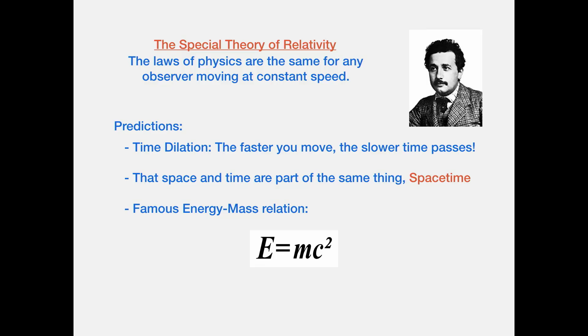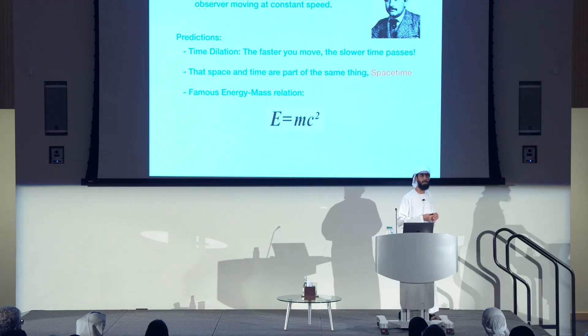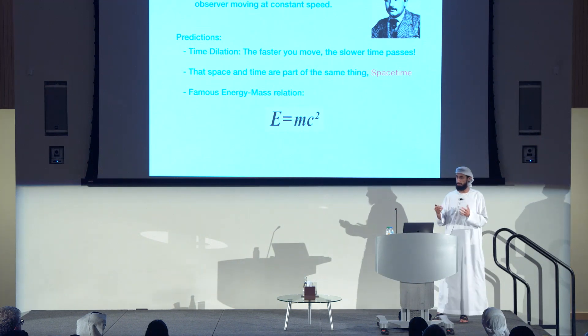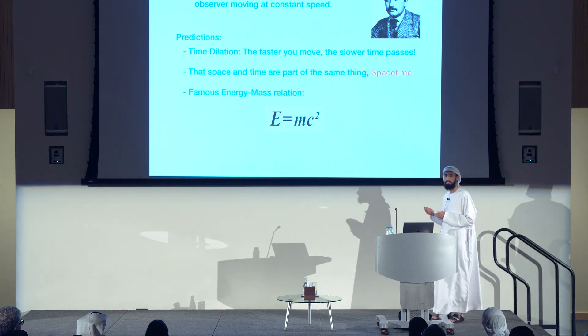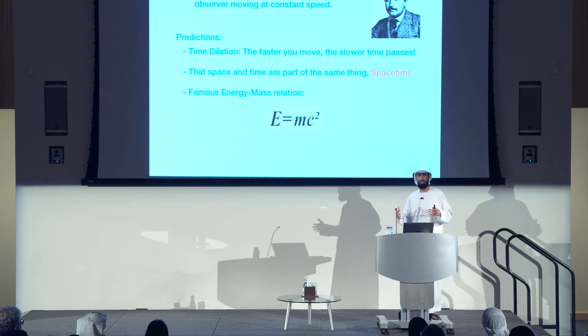There are more predictions of special relativity. One is that space and time are really part of the same thing, which we call space time. Another is the famous energy-mass relation E equals MC squared, which says that the energy contained in you is equal to your mass multiplied by the speed of light squared. We know this equation is correct because of all the shirts it's printed on.